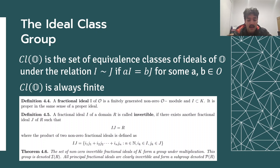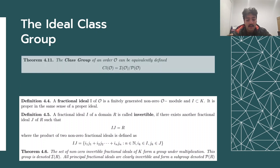A fractional ideal I of R is called invertible if there exists another ideal J such that their product is the entire domain R. The set of non-zero invertible fractional ideals of k forms a group under multiplication, denoted I(R). The principal fractional ideals form a subgroup, denoted P(R). With these, we can show that the class group is equivalent to the quotient group I(O) / P(O) for any order O of k.